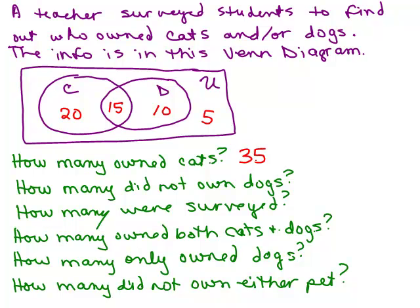How many did not own dogs? If we look at how many did own dogs, we look at the dog circle — altogether there's 25 in there. But we want people outside that circle. We've got the 20 students in the cats-only region plus the 5 that don't own any animals, so 20 plus 5 is 25.